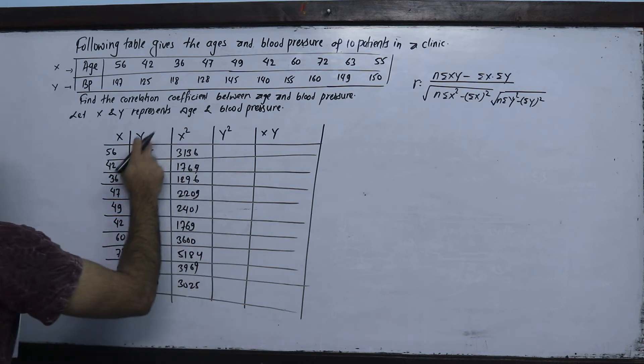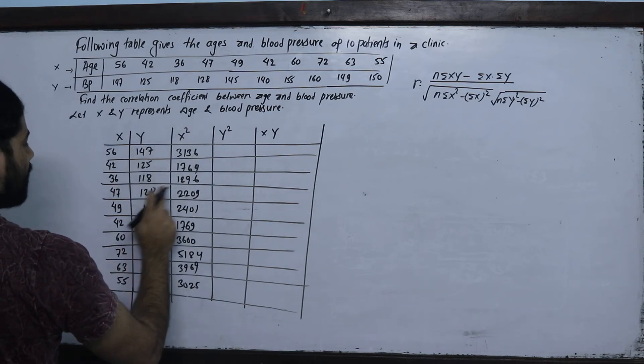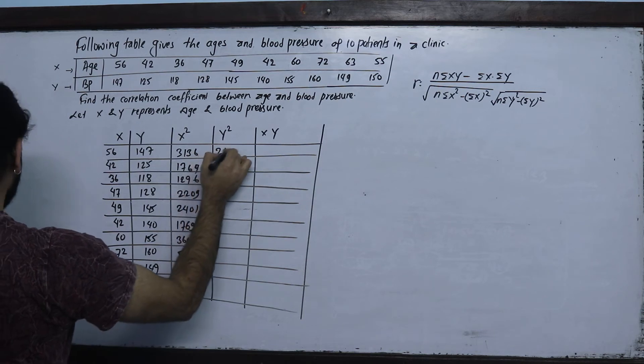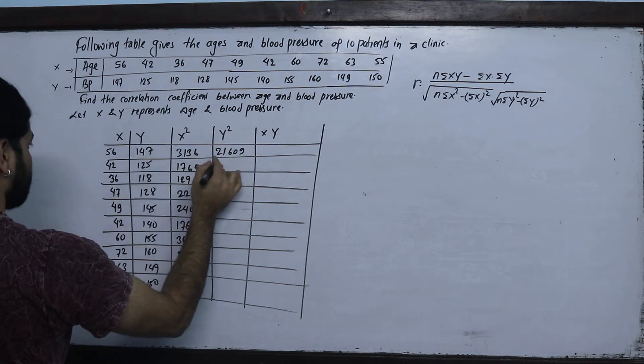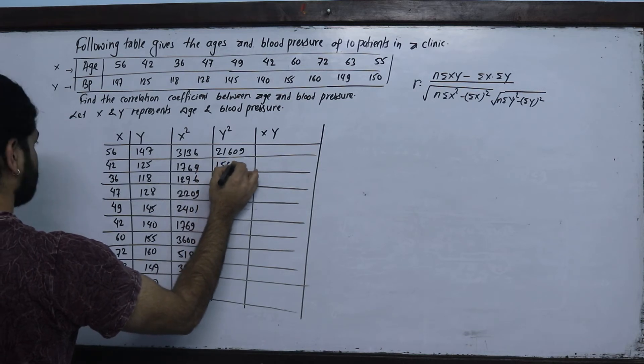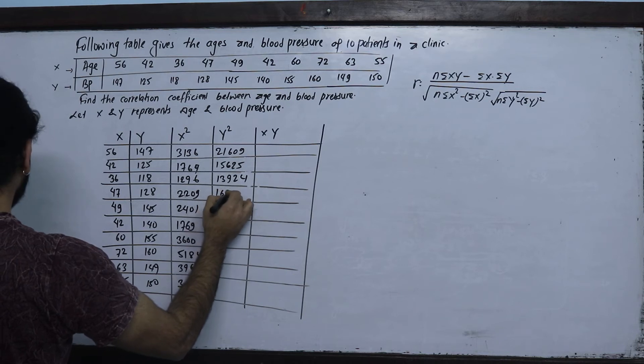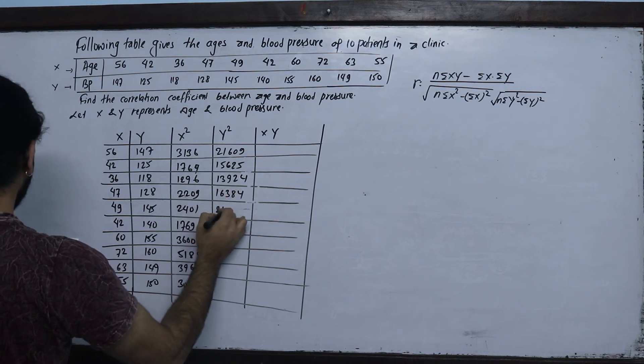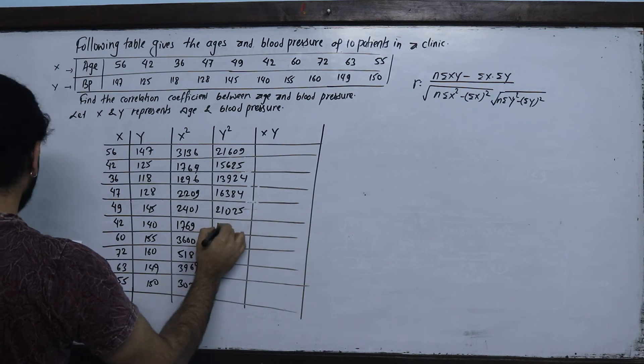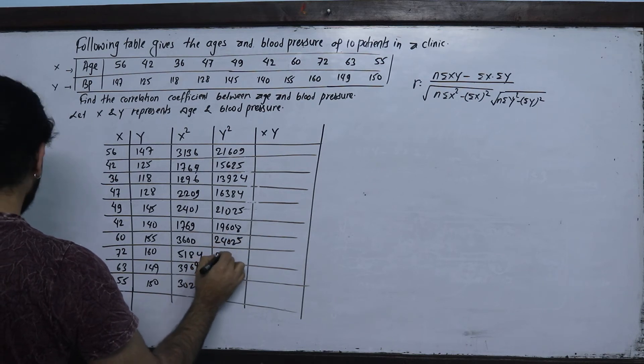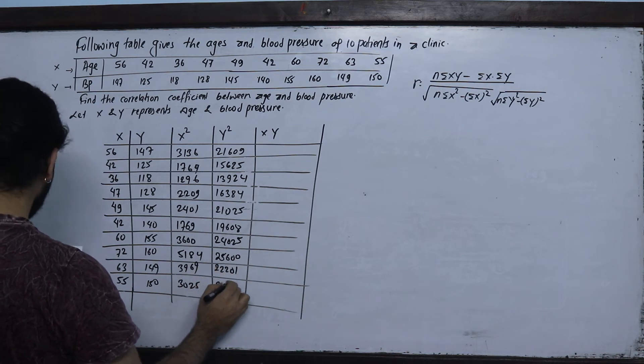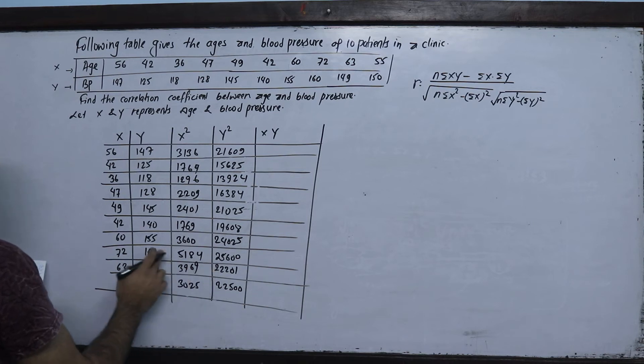Now y square. 147 square is 21609, 125 square is 15625, 118 square is 13924, 128 square is 16384, 145 square is 21025, 140 square is 19600, 155 square is 24025, 160 square is 25600, 149 square is 22201, 150 square is 22500.